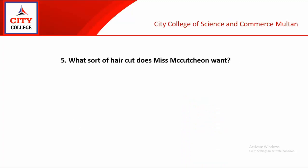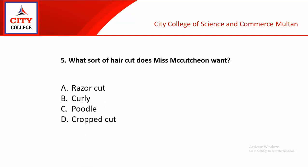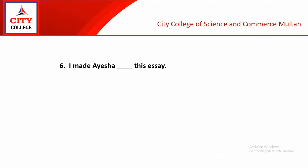5th objective: What sort of haircut does Ms. McCutcheon want? Given options are razor cut, curly, poodle, cropped cut. And the correct option is C, poodle.